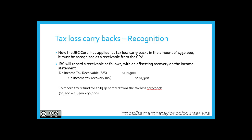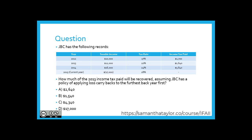Let's take a look at one more question. JVC has the following records. How much of the 2013 income tax paid will be recovered, assuming JVC has a policy of applying loss carrybacks to the furthest year back first? In 2015, the current year, there's a $17,000 tax loss, and the company had been profitable in each prior year. Is it A) $2,640, B) $1,540, C) $4,340, or D) $17,000?